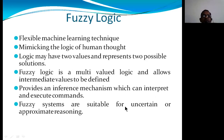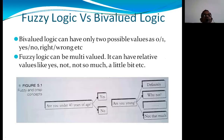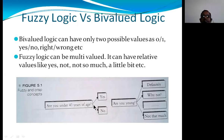Fuzzy systems are suitable for uncertain and approximate reasoning. Now let us compare: fuzzy logic is multi-valued, whereas binary logic — also called bivalued — provides only two values: either 0 or 1, yes or no, right or wrong. This is what we discussed in subjects like STLD (Switching Theory Logic Design) or DLD (Digital Logic Design). Fuzzy logic, by contrast, can be multi-valued.